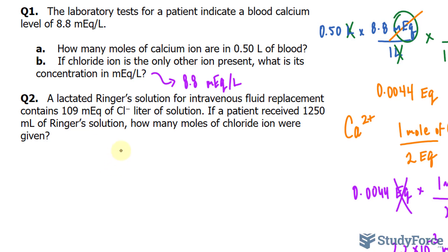So, we've been given 109 milliequivalent of chlorine per liter, and we need to take this number and change it into liters so that we can multiply it to this ratio. That's not hard to do. To go from milliliters to liters, you divide by 1,000, so we should end up with 1.250 liters.